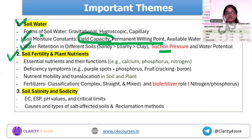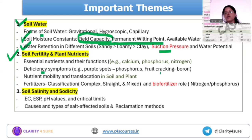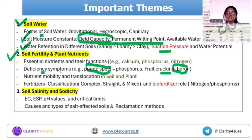Next is soil fertility and plant nutrients. Cover essential nutrients and their functions — macro, micro, and secondary nutrients like CAMGS, NPK. Know deficiency symptoms: fruit cracking is a deficiency symptom of boron, purple spot and other disorders like buttoning and whiptail are associated with other nutrient deficiencies. There are different deficiency disorders including chicken and hen disease.